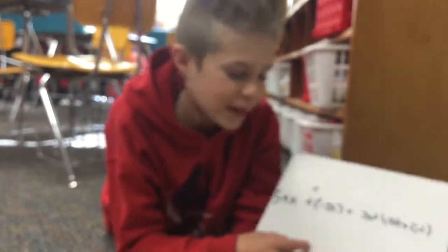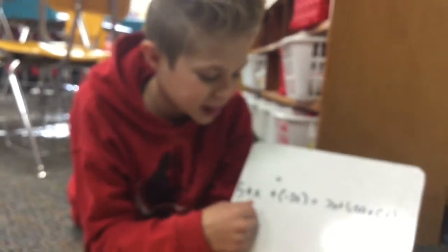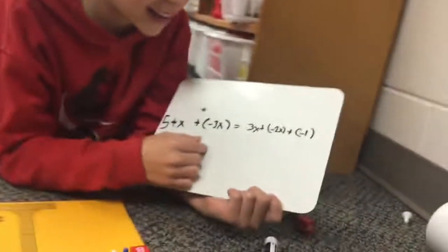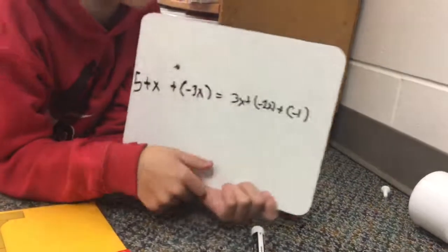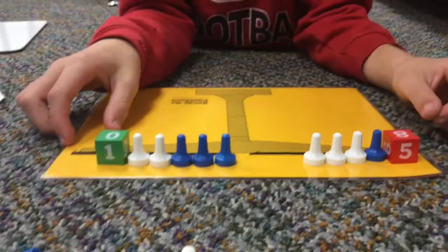This is my fun problem. 5 plus x plus negative 3x equals 3x plus negative 2x plus negative 1. This is how the problem should be set up.